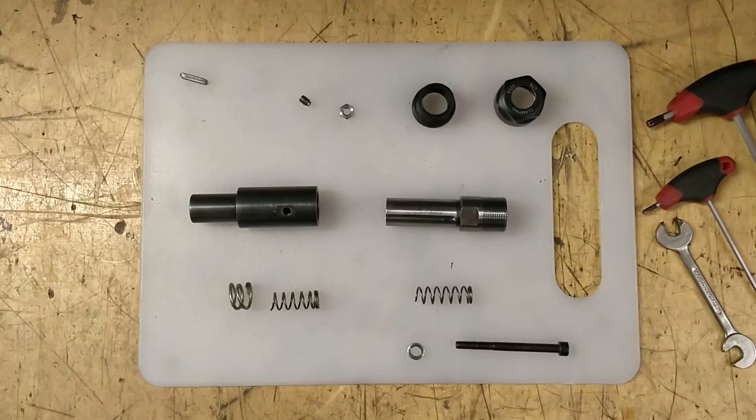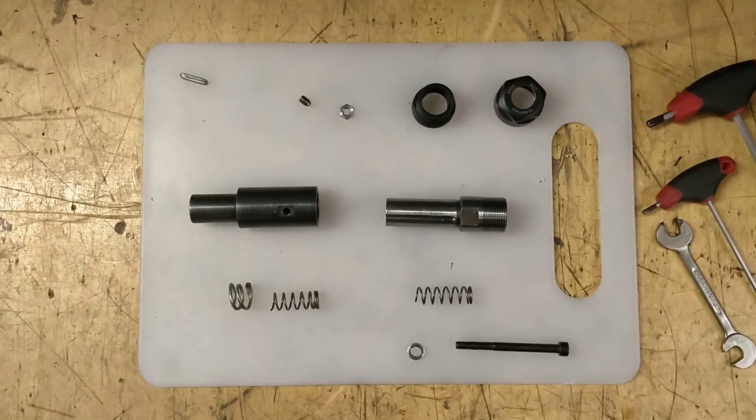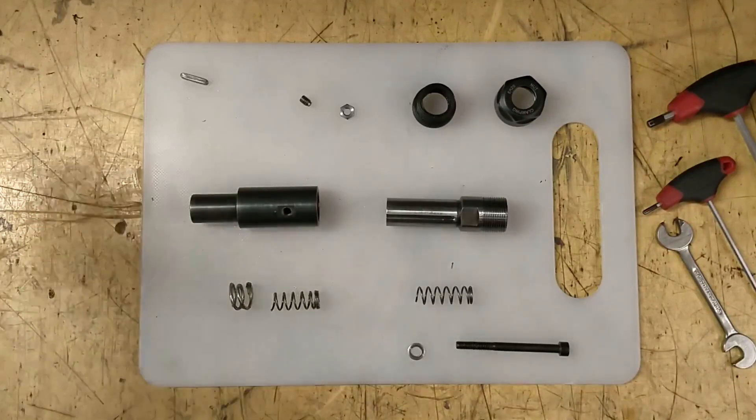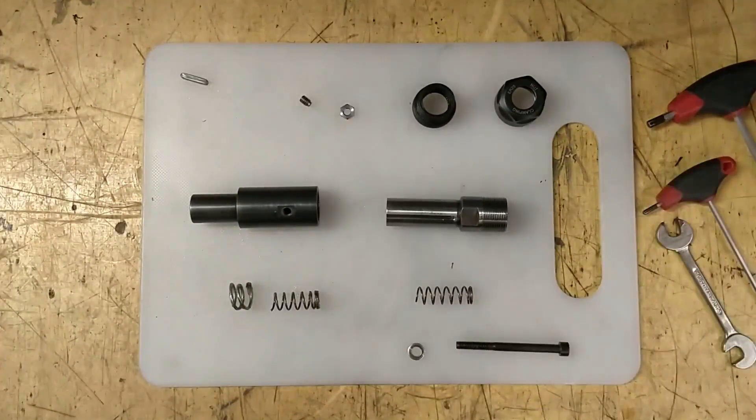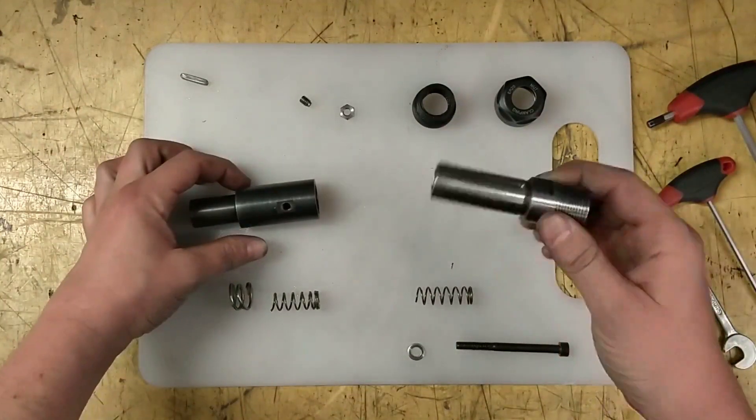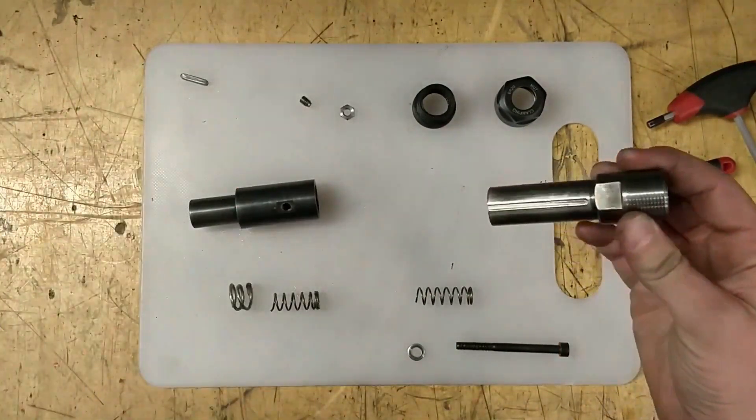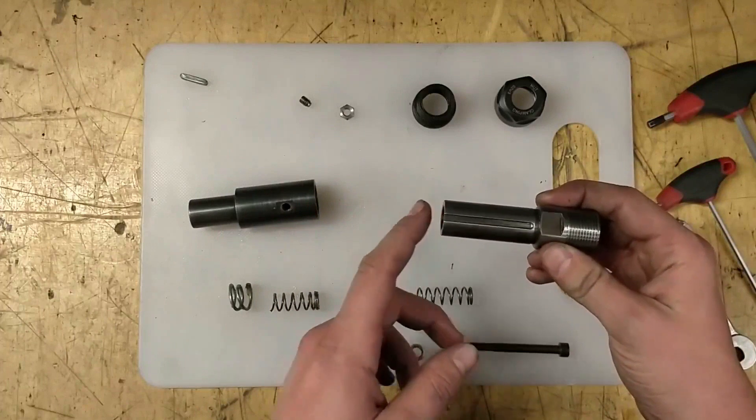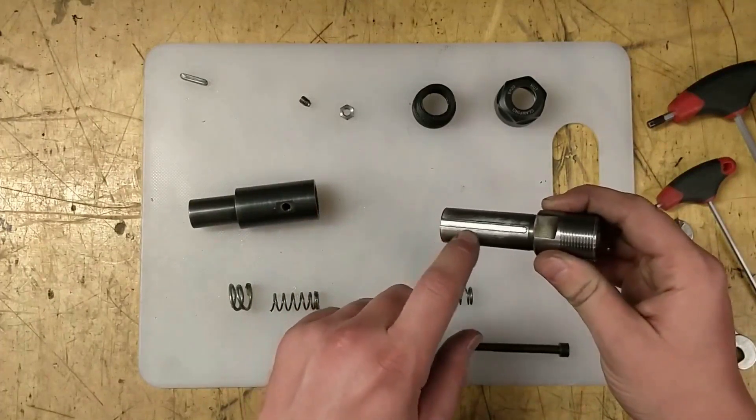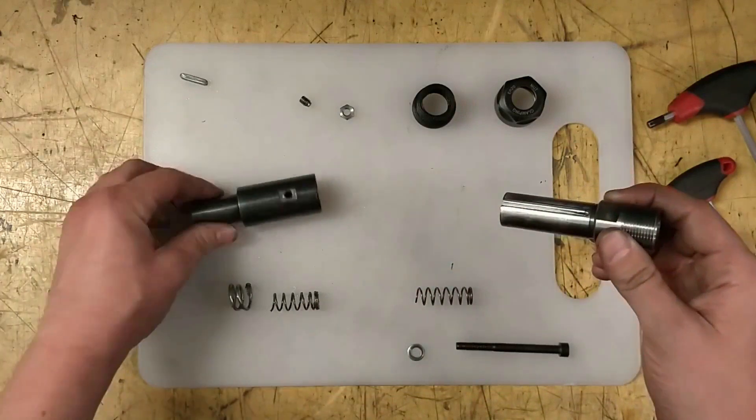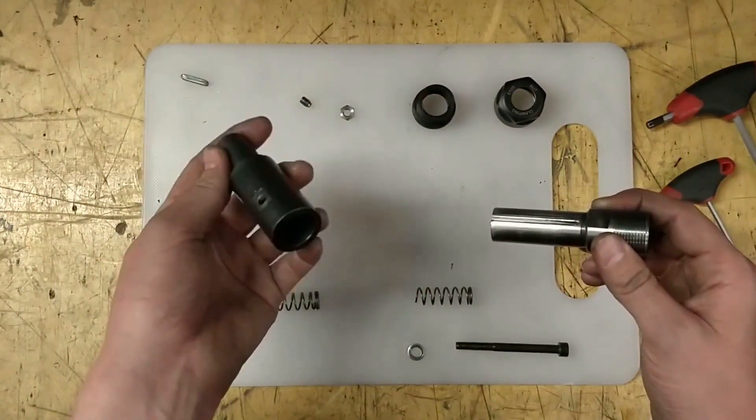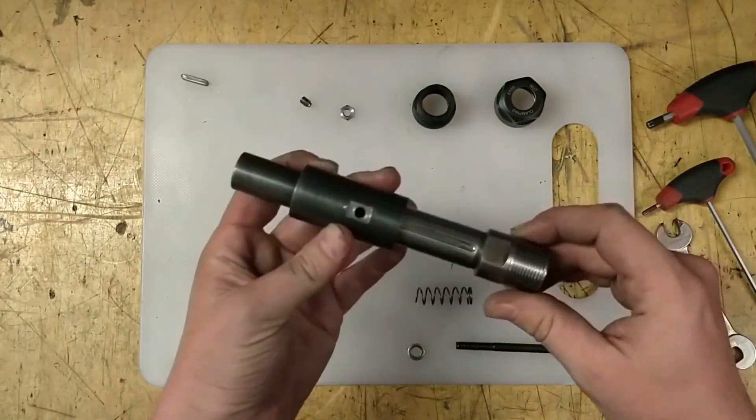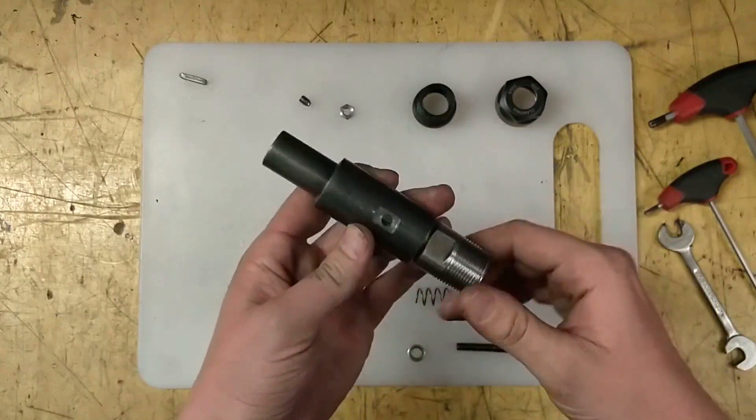So I came up with this little quick and dirty floating tapping holder, and what it does is pretty simple. There's this ER20 collet with a 20 millimeter straight shank which I cut to size and milled the 4 millimeter slot into, and I have this part I turned on the lathe.